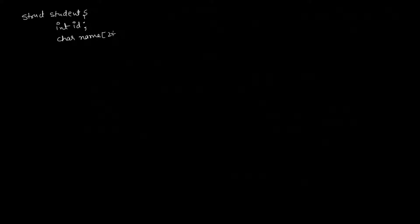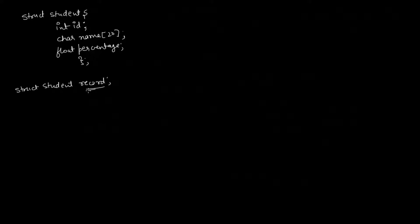In the previous example we declared a structure variable separately. We declared a structure like this: struct student, and then we declared a variable of this struct student by writing struct student record. That means this record variable is of type student.